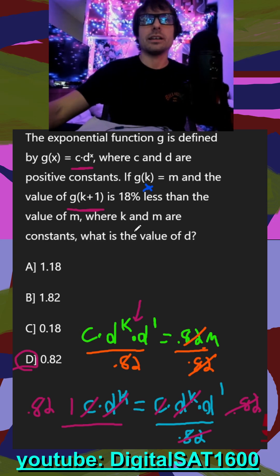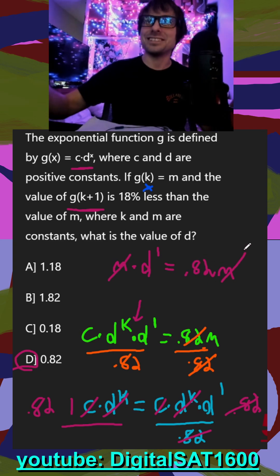So our little shortcut here is g of k is equal to m. So g of k plus 1 is going to be equal to m times d, because there's that extra d. They're also saying that g of k plus 1 is equal to 18% less than m, which is 0.82m. Cross off your m's, and you get d is equal to 0.82.